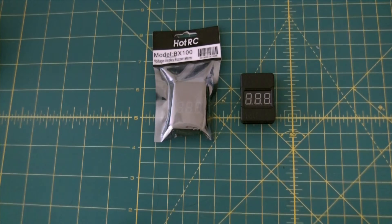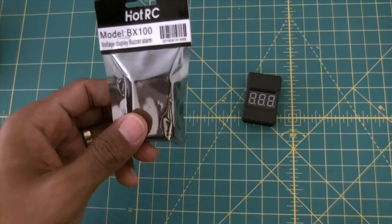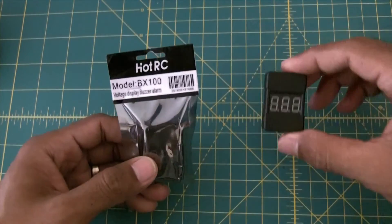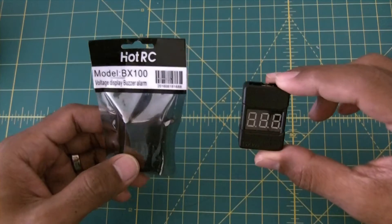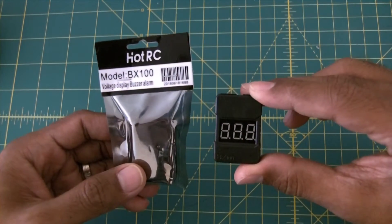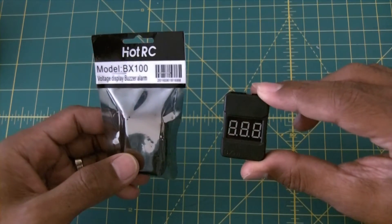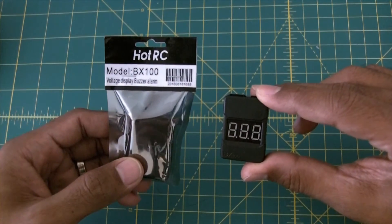Hi everyone, I'd like to quickly share my experience with this HotRC model BX100 that I purchased from Banggood for about $4. They had a sale of two of them for $4. It's basically a voltage display, buzzer, alarm, and lipo checker for your RC batteries.